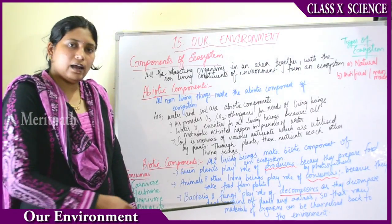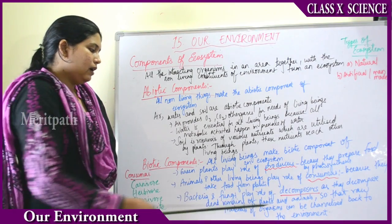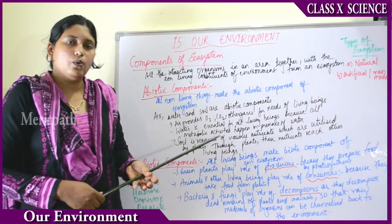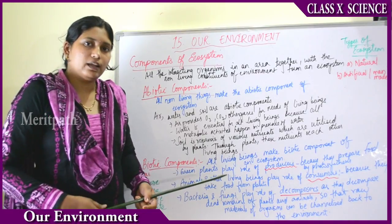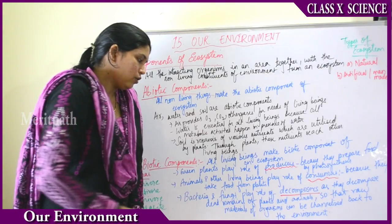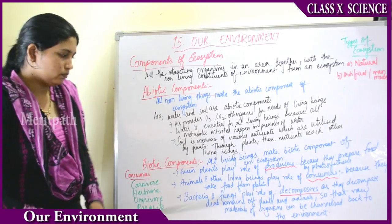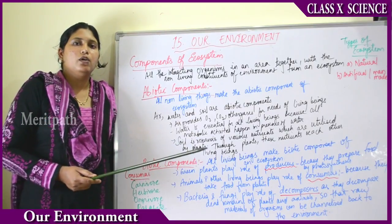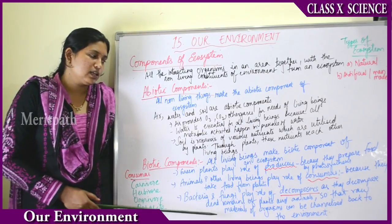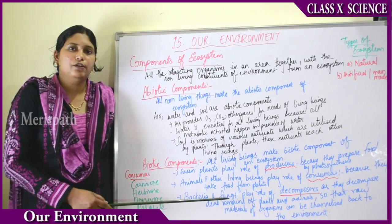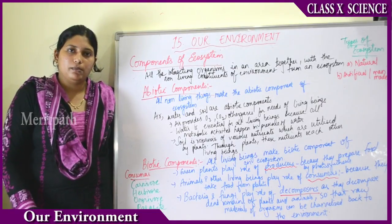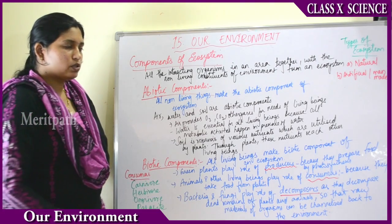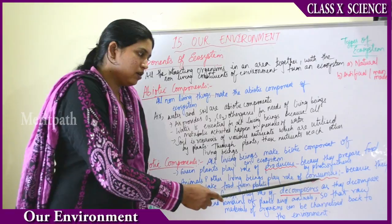Next are decomposers. Bacteria and fungi play the role of decomposers. They decompose the dead remains of plants and animals. When an animal or plant dies, with the help of bacteria and fungi, the dead remains are decomposed and degraded so that the raw materials of the organisms can be channelized back to the environment. That is why bacteria and fungi are known as decomposers.